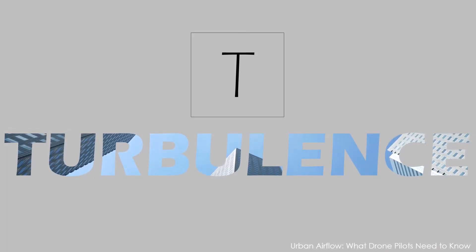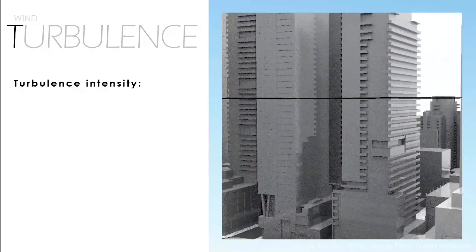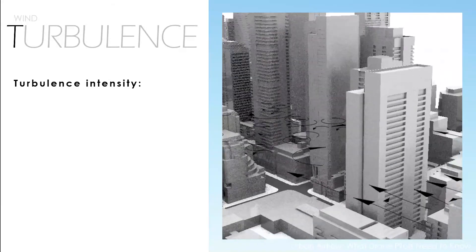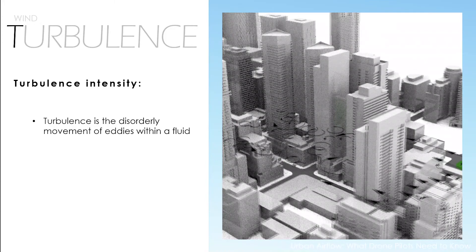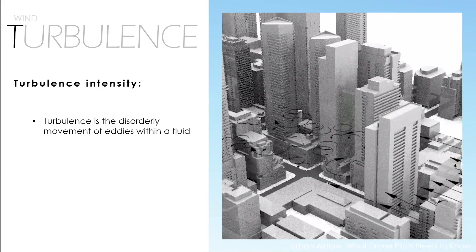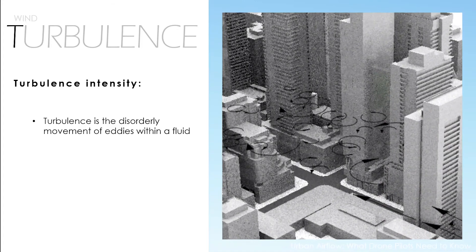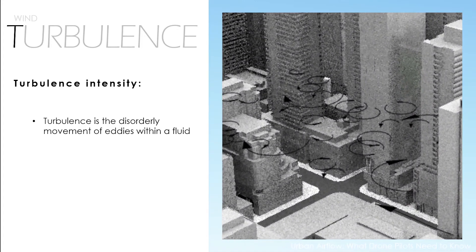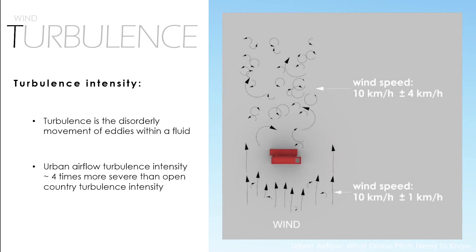RPAS instability can also result from high intensity turbulence within urban airflow. Atmospheric turbulence is a disorderly movement of eddies in the atmosphere. Atmospheric turbulence intensity is a measure of the fluctuation in wind speed caused by turbulence in comparison to the average wind speed. The continuous change of airflow in both direction and speed causes rapidly changing forces on RPAS, which increase as the turbulence intensity increases. Within the urban environment, turbulence intensity can be four times more severe than in the free atmosphere above open country.